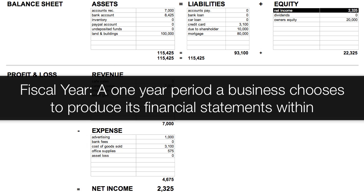Sometimes the fiscal year follows the calendar year, which is January 1st through December 31st, or other times it could be something like September 1st to August 31st, or any other one-year period that a business chooses to produce its financial statements within.